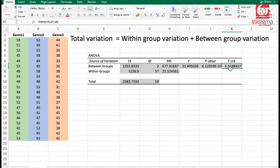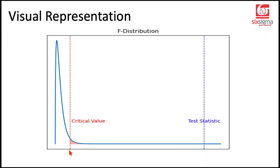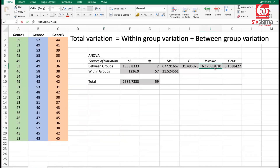These are the exact values we saw in the previous video when we used the built-in utility of Excel and Python. We have the critical value of 3.15 and the test statistic of 31.5 — well within the rejection region, so the null hypothesis stands rejected. From a P value perspective, this entire area to the right of the test statistic is the P value, which is much less than 0.05. So the conclusion is the same: we reject the null hypothesis. Hope this gave you more clarity on what works behind the scenes in ANOVA. Thank you.